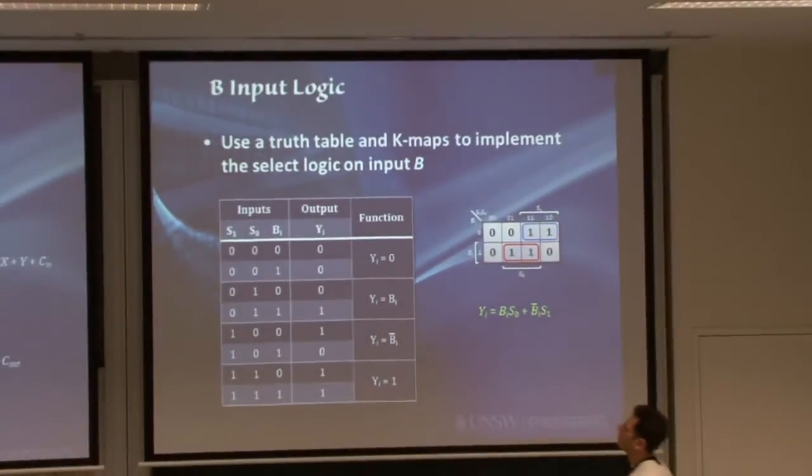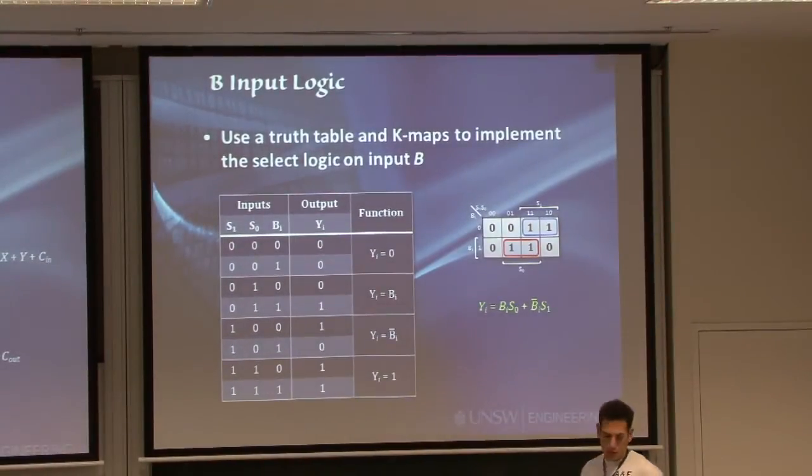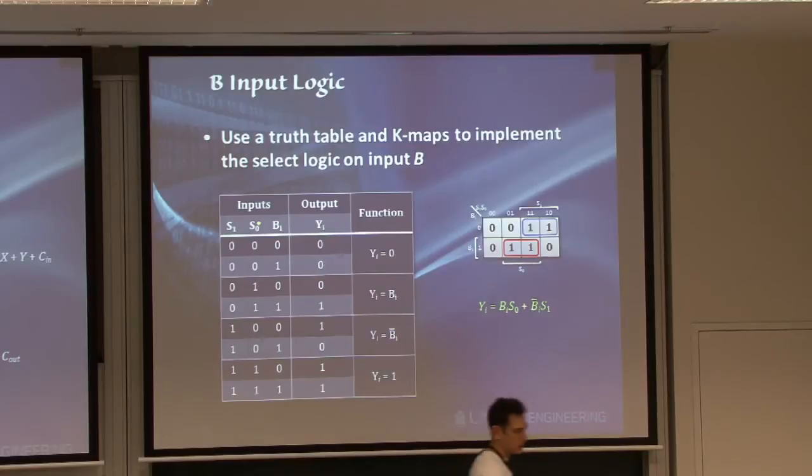Well, we can just put it all in a Karnaugh map. So we'll put all the different options. And I will design a bit by bit circuit for this thing. So if before we were talking about an n-bit arithmetic circuit, now we'll show you how to manipulate the input Y on a bit by bit basis. And then we just duplicate the same circuit as many times as we need. So we have all the different options for S1, S0, and the bit B.